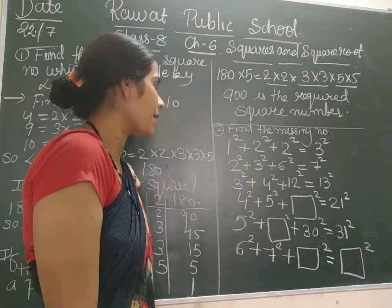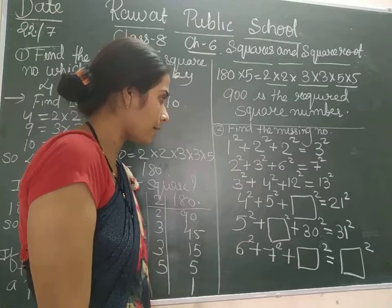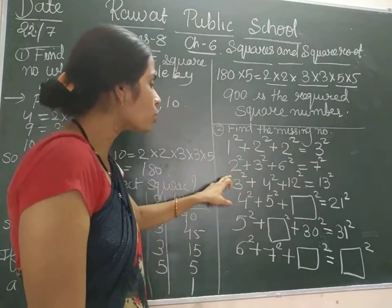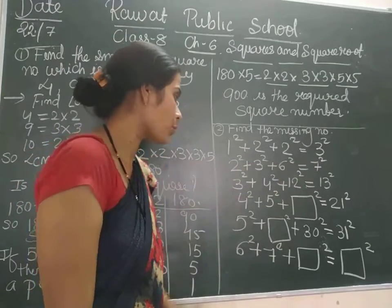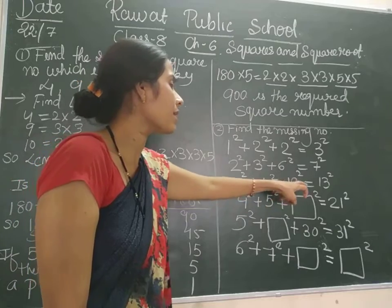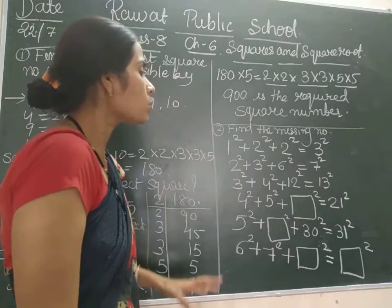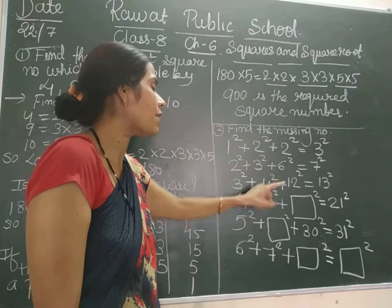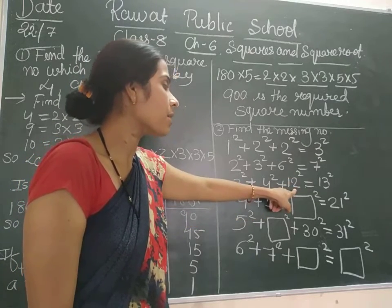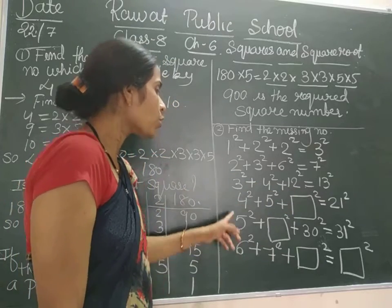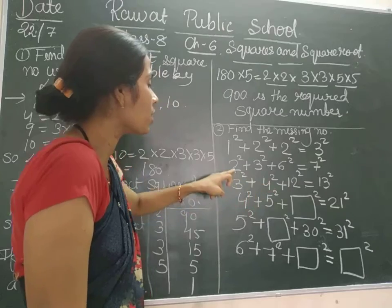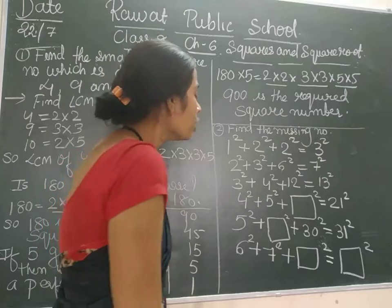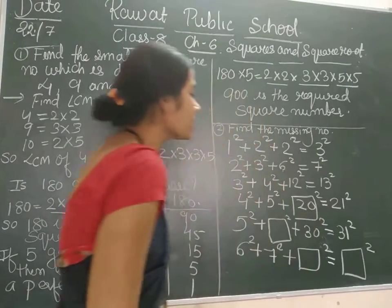In the next question we are asked to find the missing number. We are given some patterns: 1² + 2² + 2² = 3², 2² + 3² + 6² = 7², 3² + 4² + 12² = 13². As you can see, the third term is the product of the first two numbers — 4 and 3 give 12. Similarly, 2 into 3 is 6, and 4 into 5 is 20. So we can write 20² for the next term.